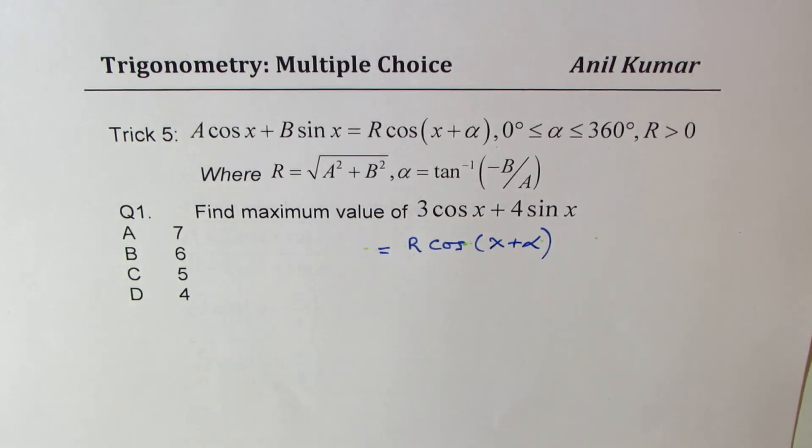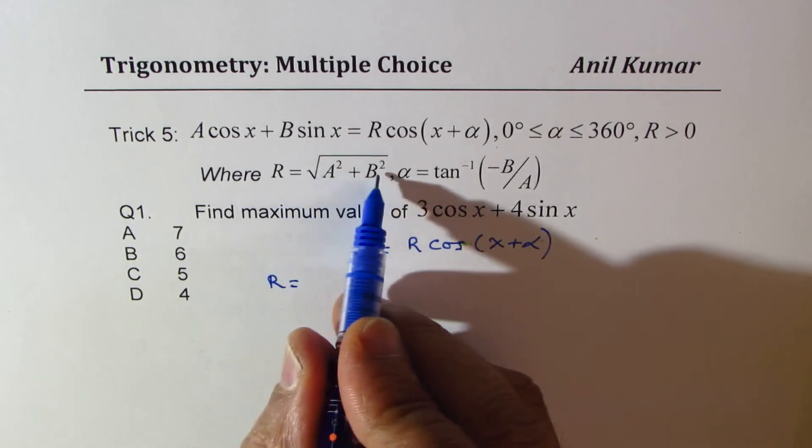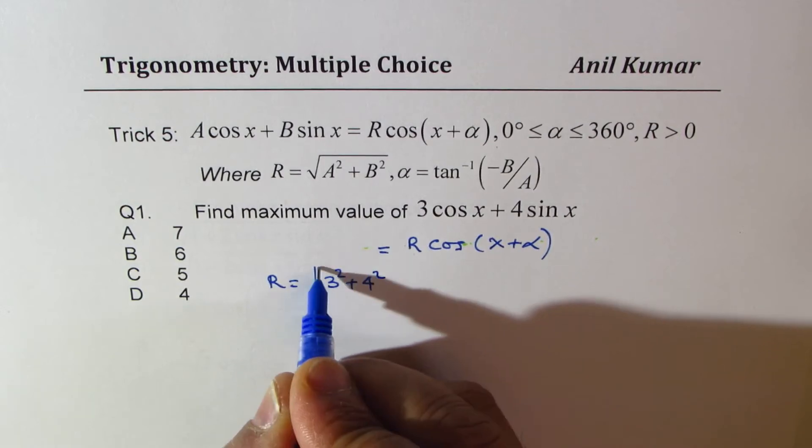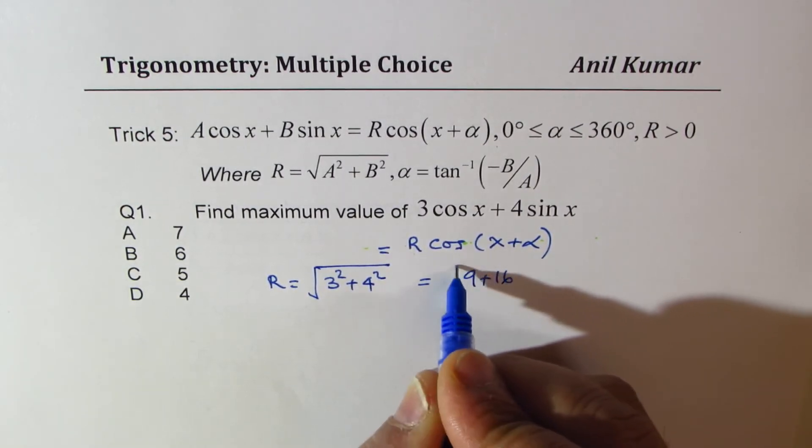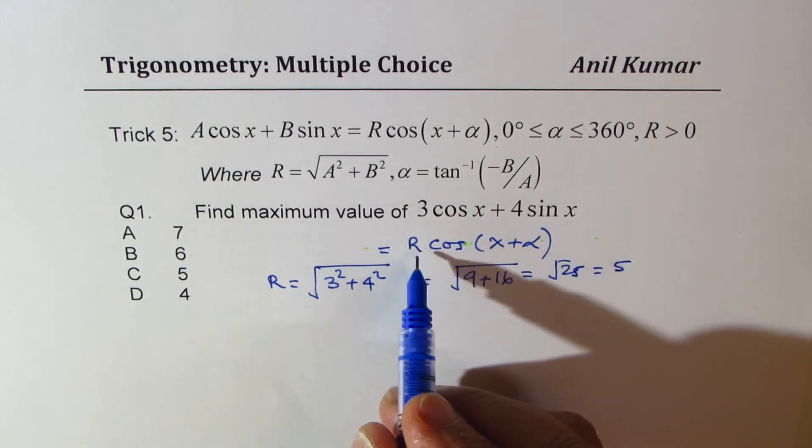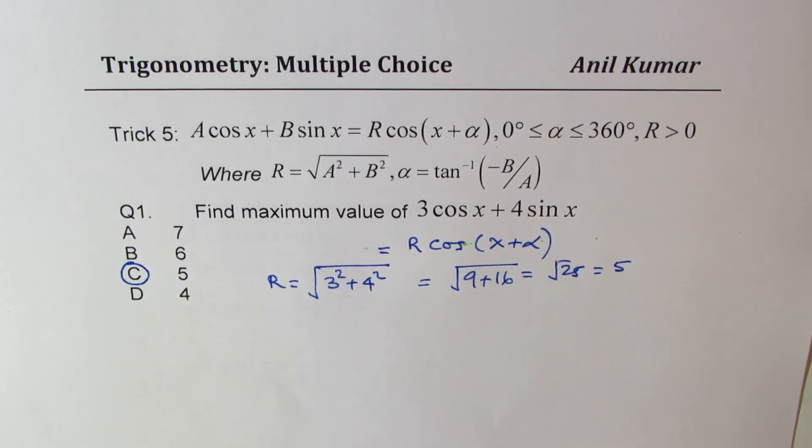That is how we are going to write it, where R is A squared plus B squared square root. That means 3 squared plus 4 squared square root, which is square root of 9 plus 16, which is square root of 25, which is 5. So R is 5, and therefore that is going to be the magnitude. The maximum of this is going to be the amplitude, R.